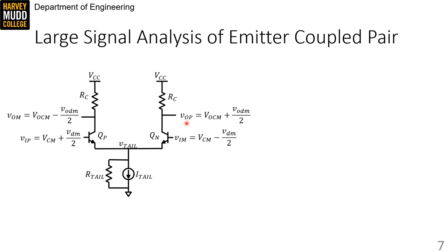We start the large signal analysis by writing a KVL loop from one input across the tail node to the other input. That gives us VIP minus VBEP plus VBEN is equal to VIM. Rearranging a bit, we get VIP minus VIM plus VBEM minus VBEP.